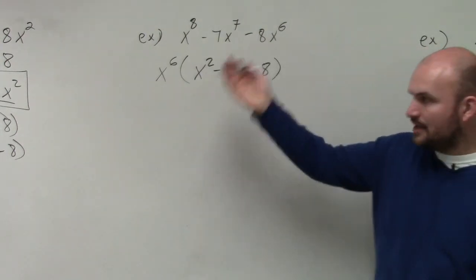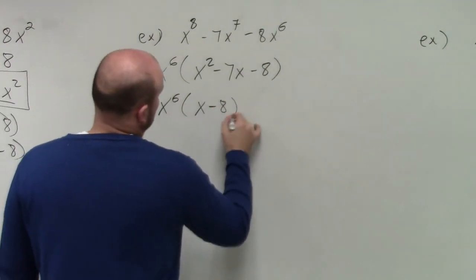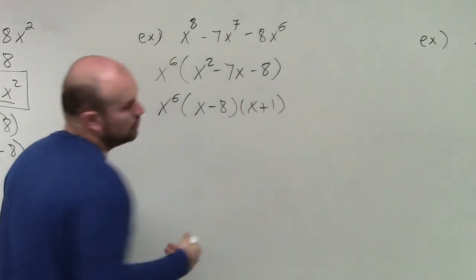Now, can we factor this? Yes. Yeah, of course, we already know how to do that, right? So we have x to the 6th, and then x minus 8 times x plus 1. Cool. Done.